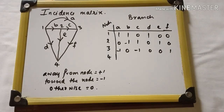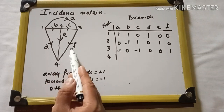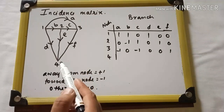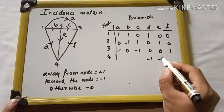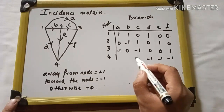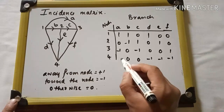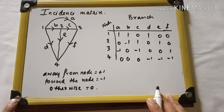For node 4, branches d, e, and f are all coming towards the node. So we write minus 1 for d, minus 1 for e, and minus 1 for f. The remaining branches are 0.